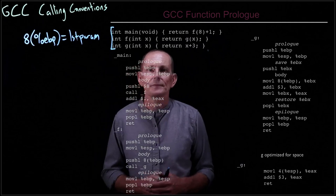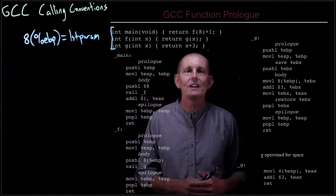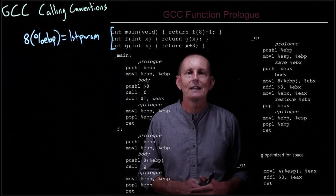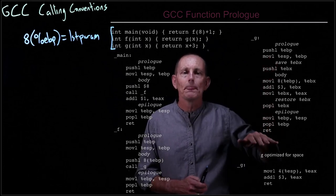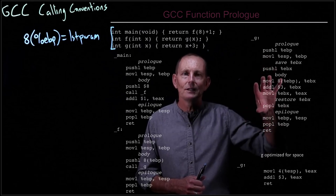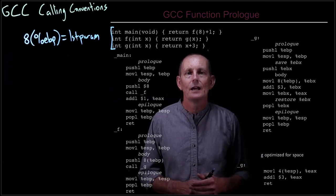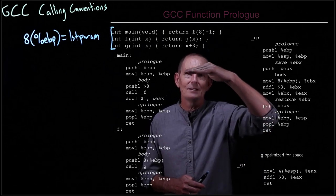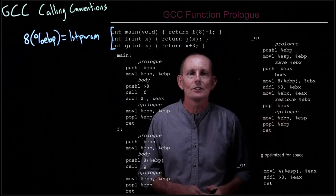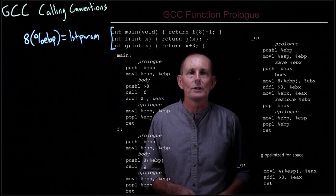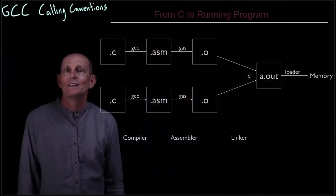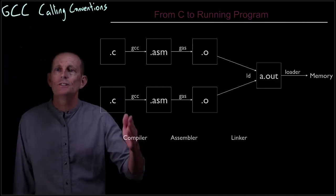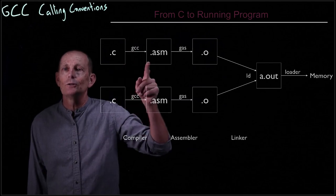So that is GCC calling conventions — you know enough now to be dangerous. It's very useful to look at assembly code along with the associated C code that produced it, and especially a disassembly where you see a C statement and then its assembly instructions alternating — fairly clear to see what's going on. The last thing to look at is how you get from C code to a running program. The GCC compiler takes a .c file to assembly language.